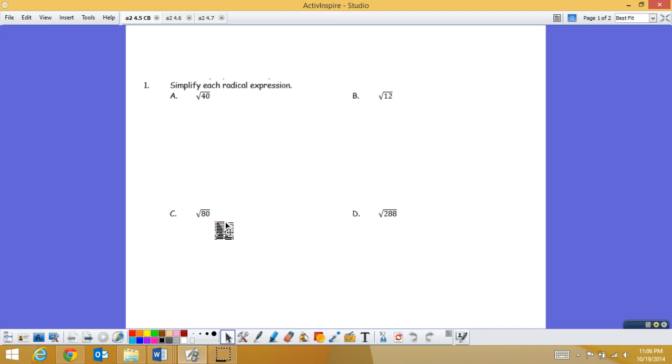So to start this off, we're first going to look at simplifying radical expressions, square roots that do not come out evenly. And we're going to look at two different methods for simplifying these. The first method we're going to look at is using perfect squares.